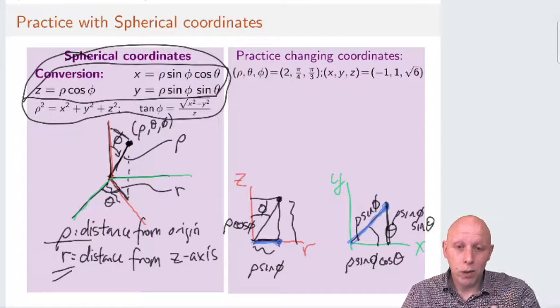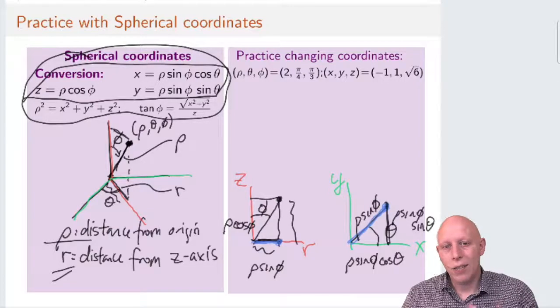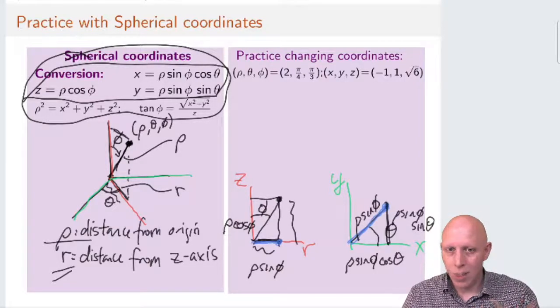And then if you want to go backwards, there's three different equations. We need to figure out what rho, phi, and theta are as a function of x, y, and z.